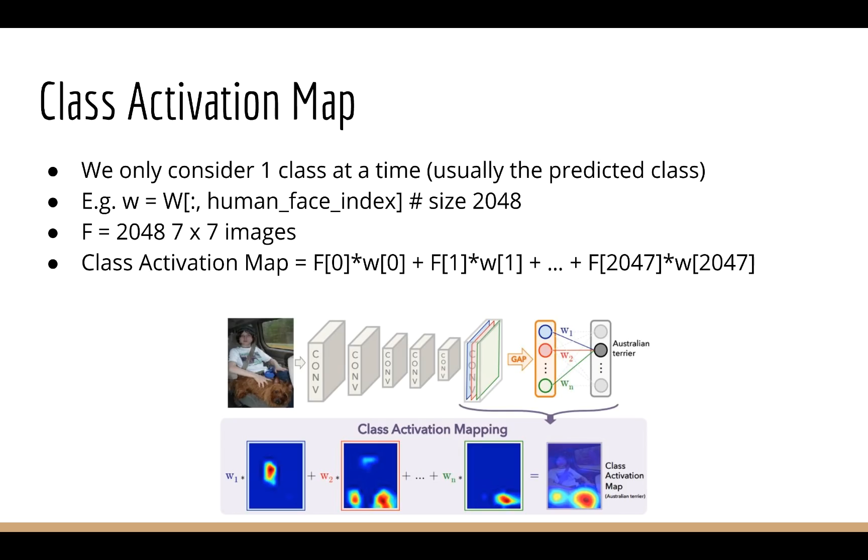If you're very observant, you will notice that this is just a dot product, or in other words, a weighted sum of images. Now what we get out of this is a single 7x7 image.